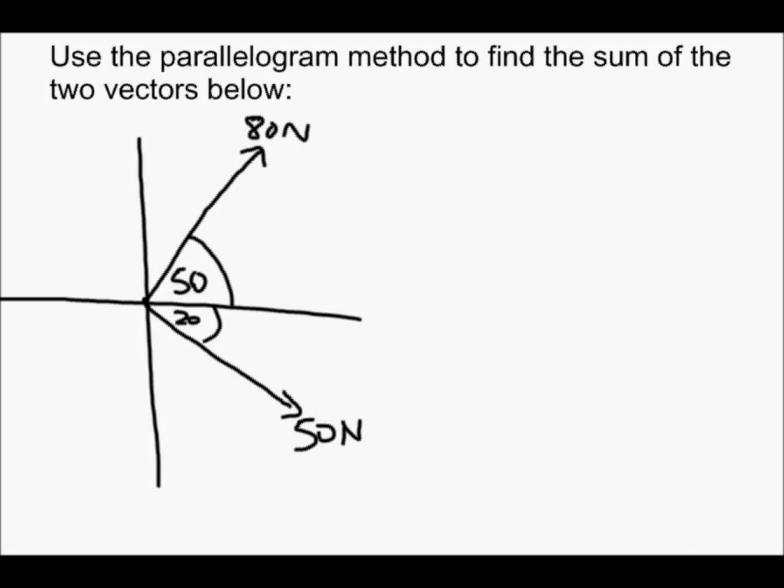The question is, I need to use the parallelogram method to find the sum of these two vectors, the 80 N vector going up at this angle and the 50 N vector going down at this angle. And it is giving us a specific method to use, so I don't have a choice. I need to use the parallelogram method.